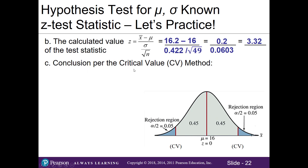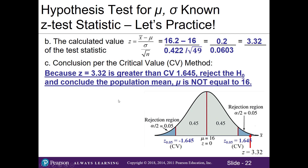Using the critical value method, we compare our Part B test statistic (Z = 3.32) against our Part A critical values of plus or minus 1.645. Since 3.32 is greater than 1.645, it falls in the tail of the distribution. Therefore, we reject the null and conclude that the population mean is not equal to 16 ounces.